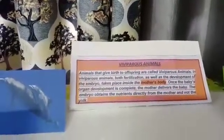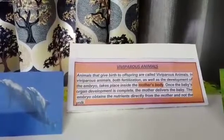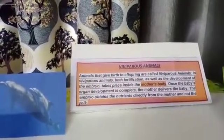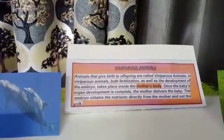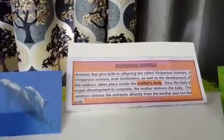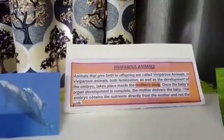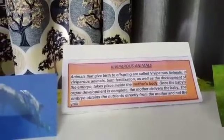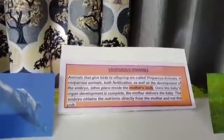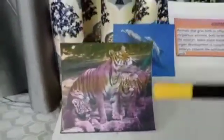Once the baby's organs are developed completely, the mother delivers the baby. The embryo obtains its nutrients directly from the mother's body. Some examples of viviparous animals are tiger, dolphin, cow, and monkey. Did you know we humans are also viviparous animals?